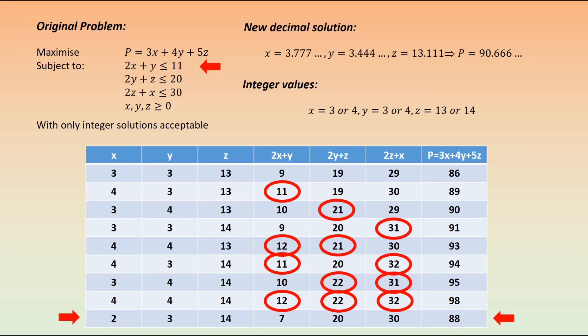If we look at our constraints, two of the values are now allowable: in our second row and our fourth from the bottom. The values which are in the row fourth from the bottom are still not allowed because that third constraint has a value of 32 for 2z plus x. However, now in our second row, we are allowed this value as well. So when x is 4, y is 3, z is 13, the constraints are now not broken, and we would get a P value of 89.